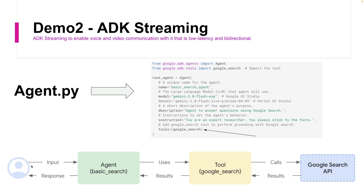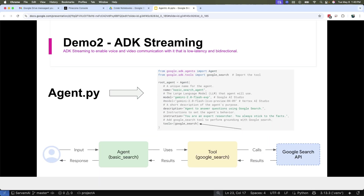Here you can see the flow: the user sends a query to the agent, the agent uses the inbuilt tool, the tool calls the Google Search API on the internet, combines the result, sends the result back to the agent, and the agent sends the response back to the user. Let's see this in the demo.